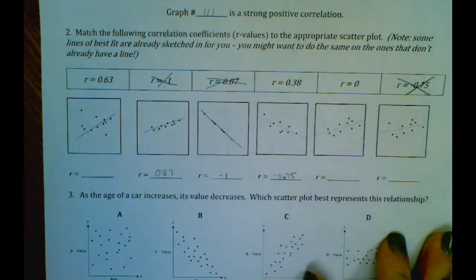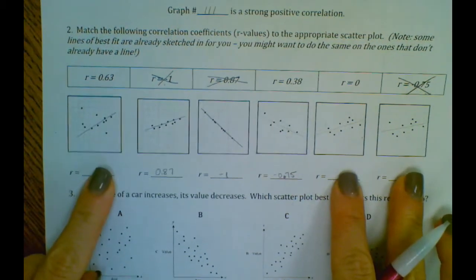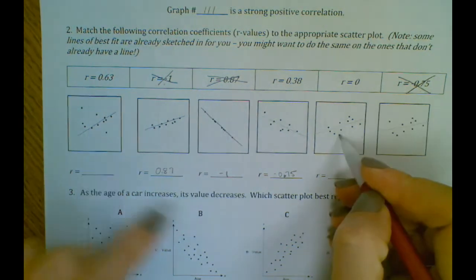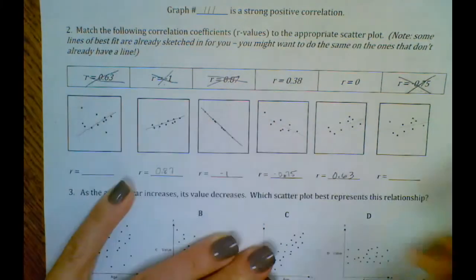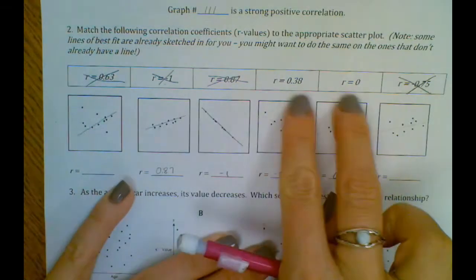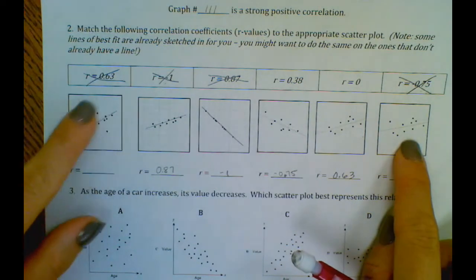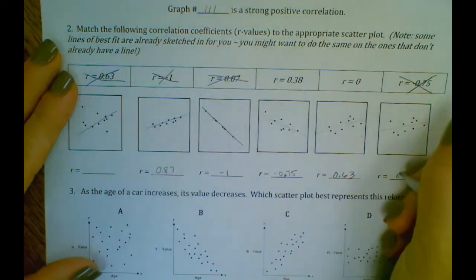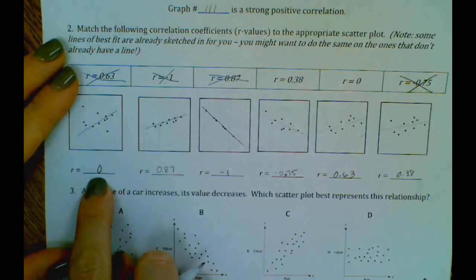And then next, 0.63. So we have these three left. It looks like to me the closest ones together is this guy here, 0.63. And then we kind of get farther away with these. These are a little less condensed than this guy, so we're going to give this guy the 0.38, and this guy will be the zero, which is the weakest graph.